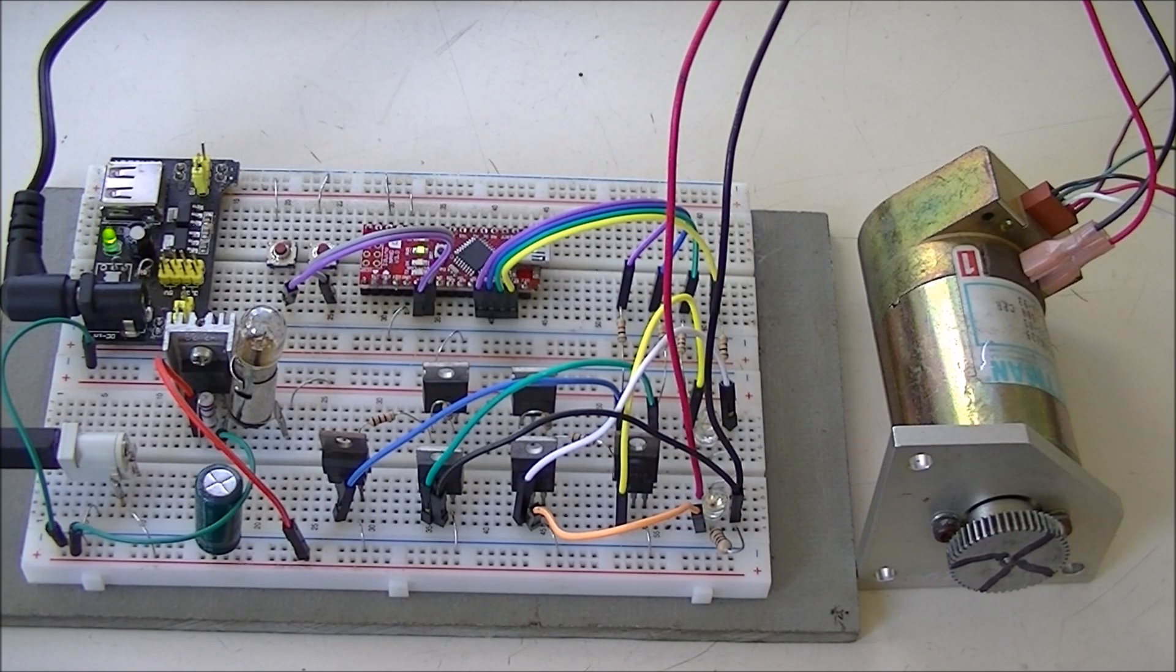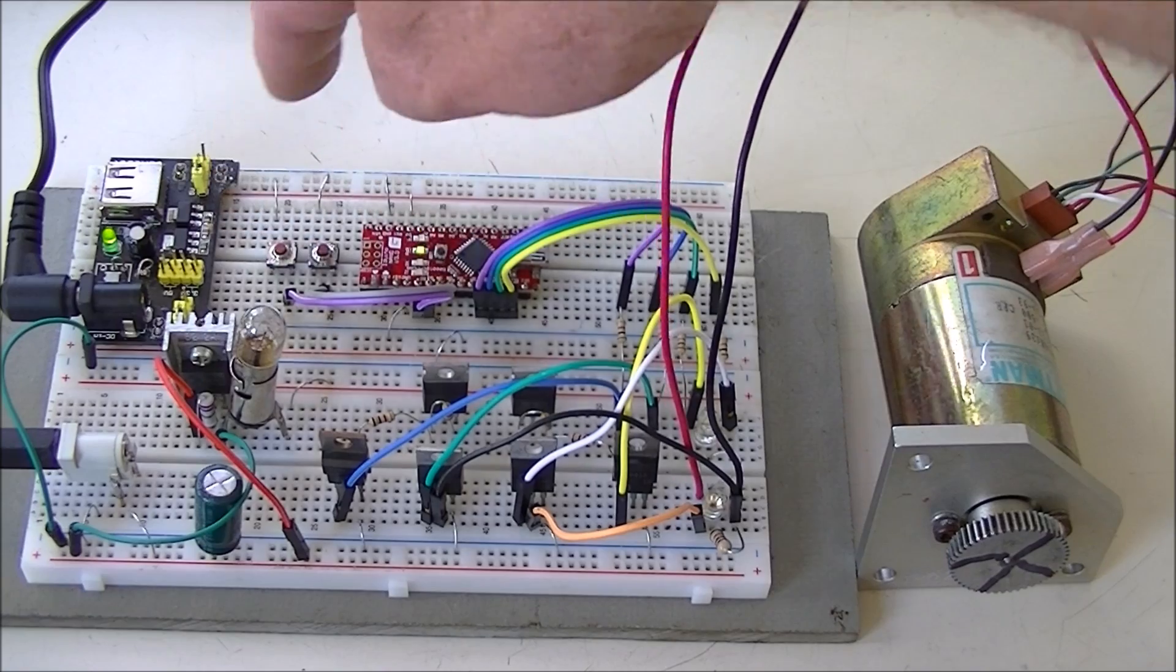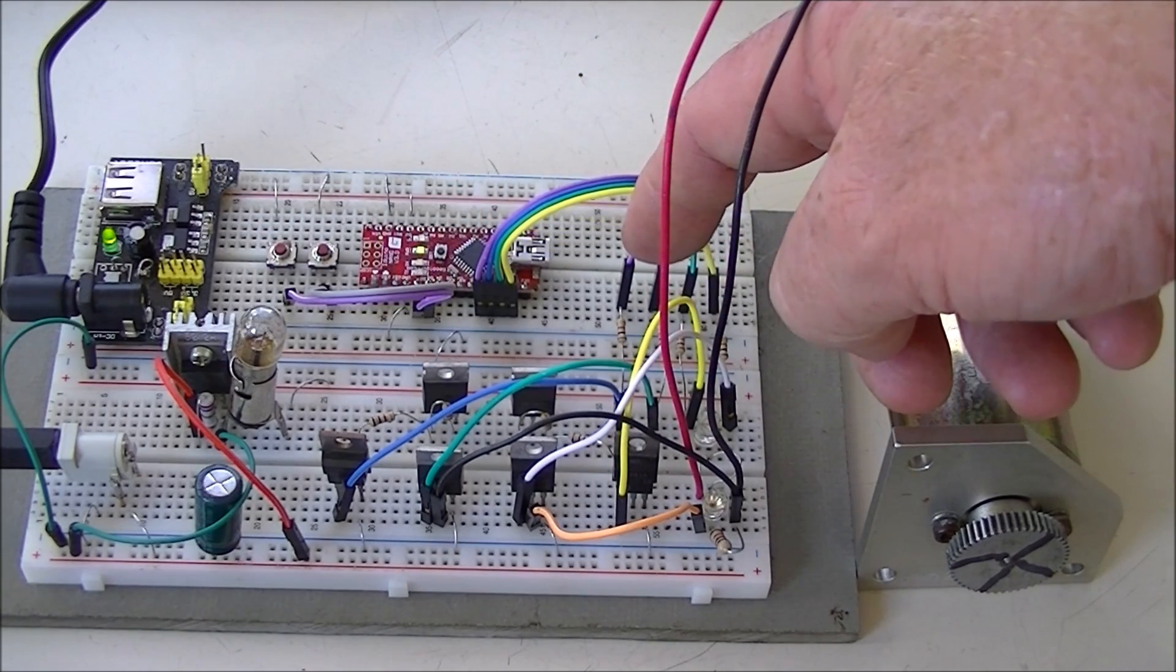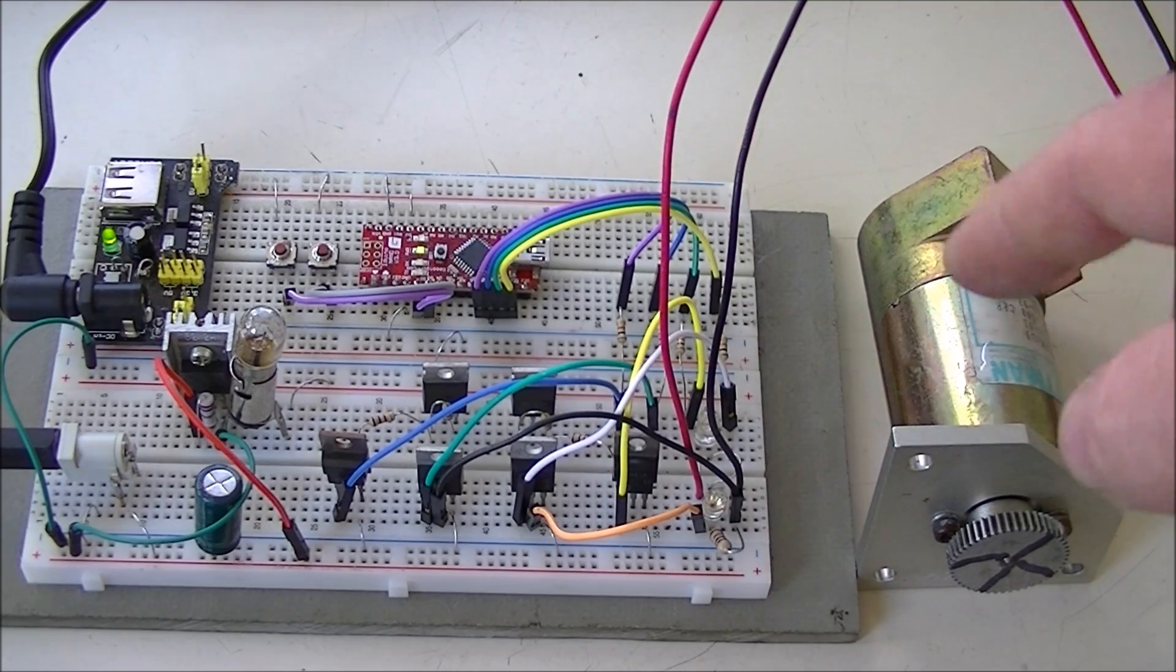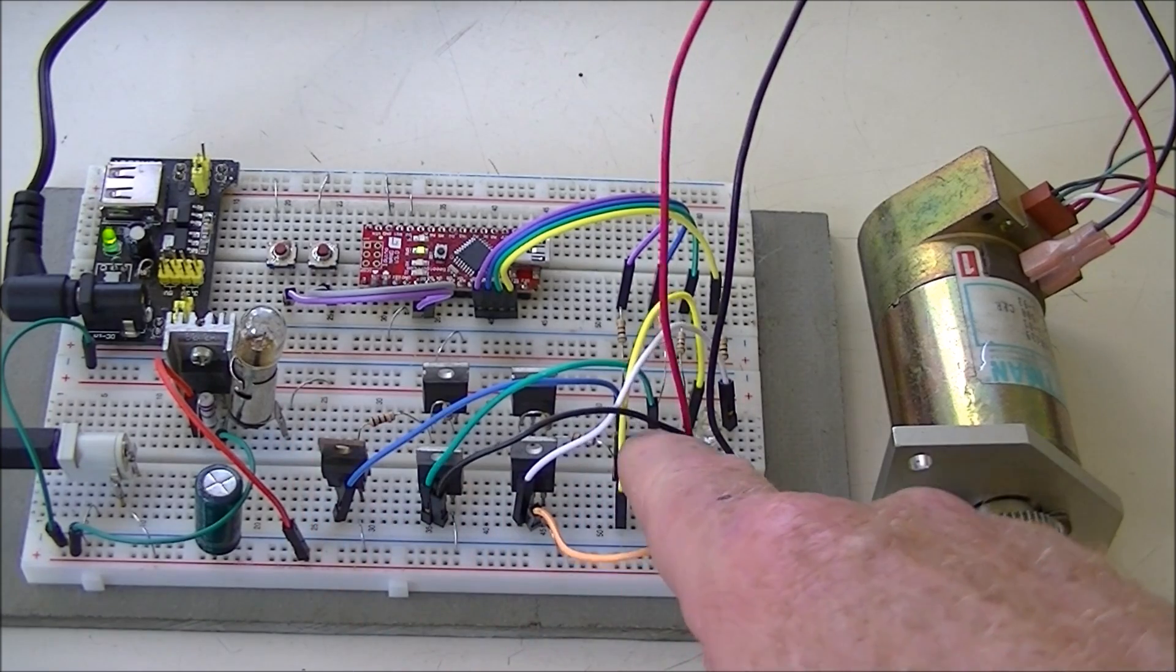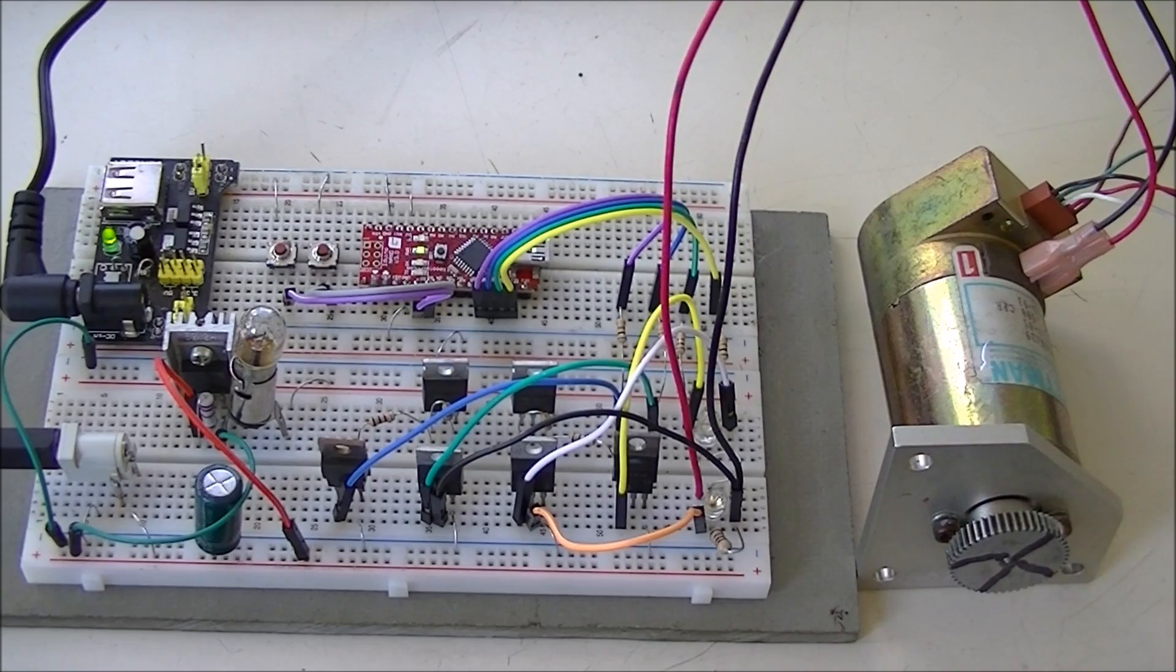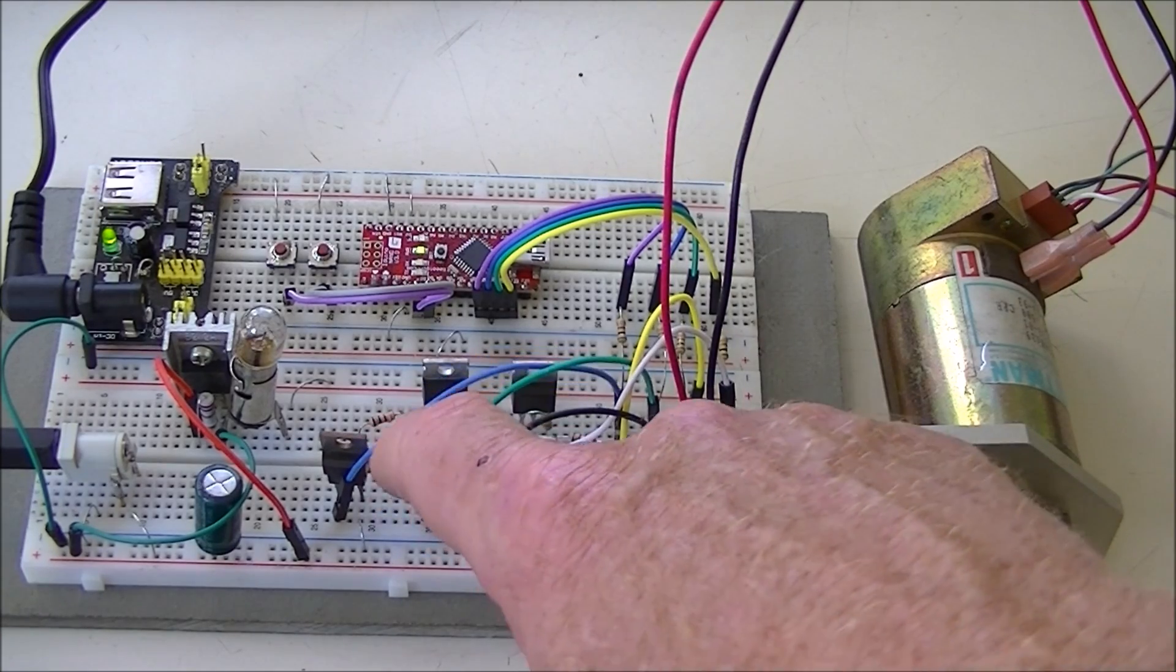All right, here we have another H-bridge circuit, this time using MOSFETs instead of bipolar transistors. Again I got two switches here, forward and reverse, an Arduino Nano. Here's the four connections from digital pin 8 through 12. These are just driver transistors for the two P-channel MOSFETs up here to keep the voltage off the Arduino, and these are two N-channel MOSFETs.